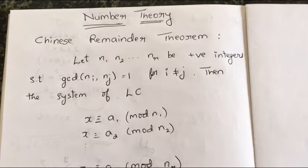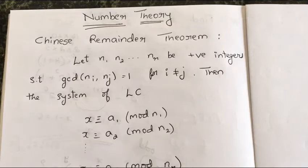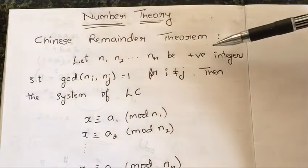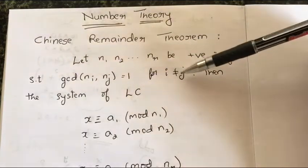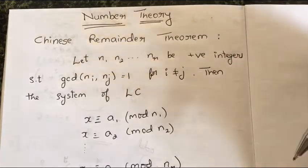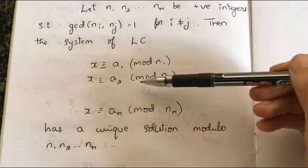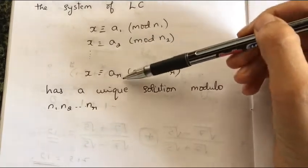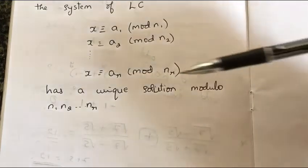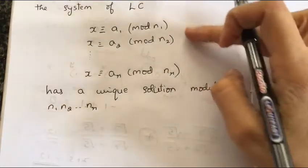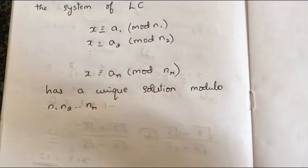Welcome to Math World. In this video we are going to study one important theorem of number theory which helps in solving systems of linear congruences — that is the Chinese Remainder Theorem. It says: let n1, n2, ..., nr be positive integers such that they are relatively prime for all i not equal to j, gcd(ni, nj) = 1. Then the system of linear congruences x ≡ a1 mod n1, x ≡ a2 mod n2, ..., x ≡ ar mod nr has a unique solution modulo the product n1·n2·...·nr. So the system has a solution and that solution is unique.